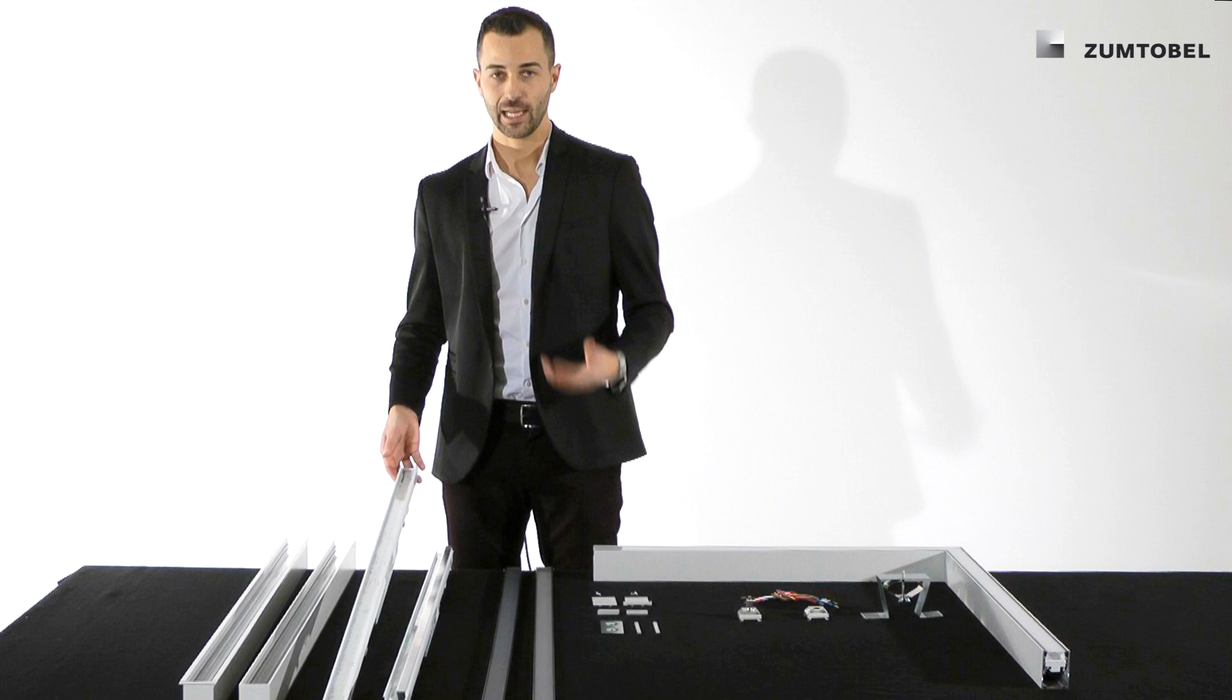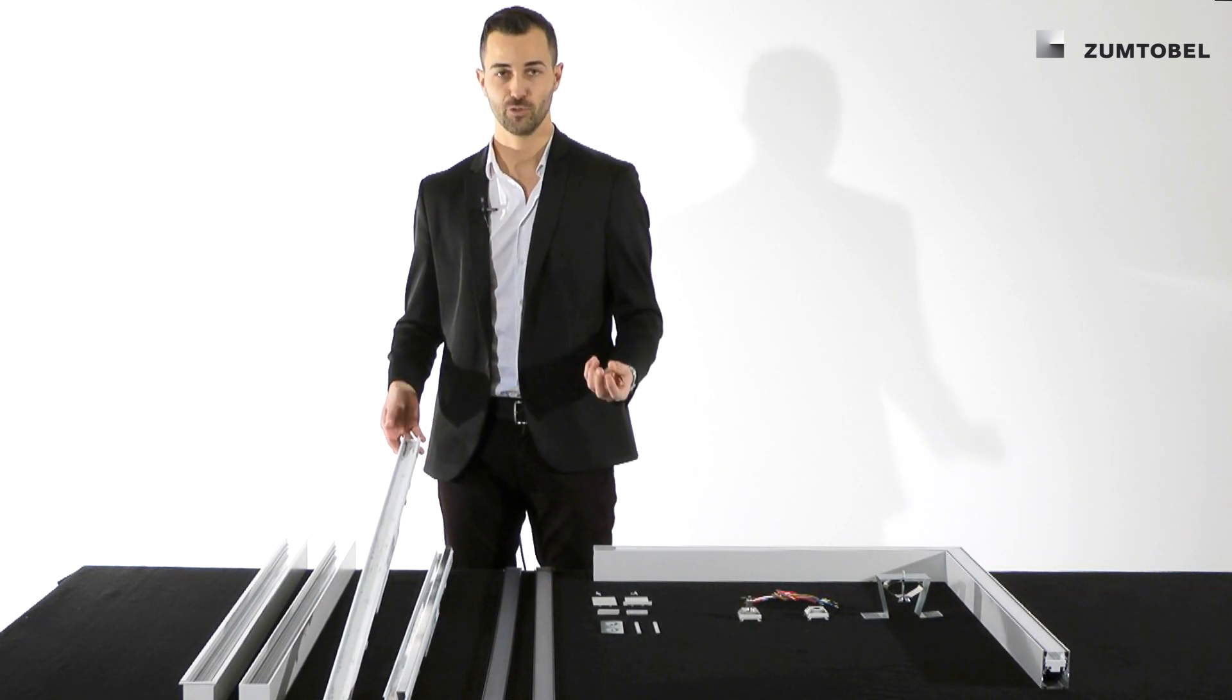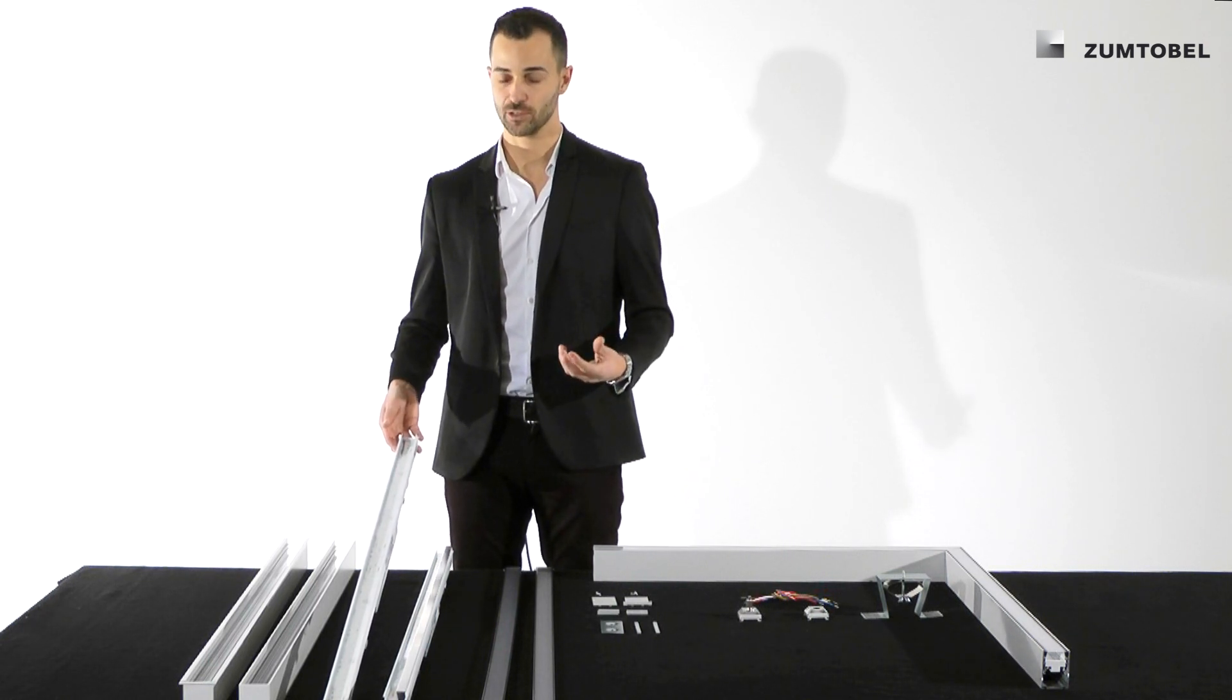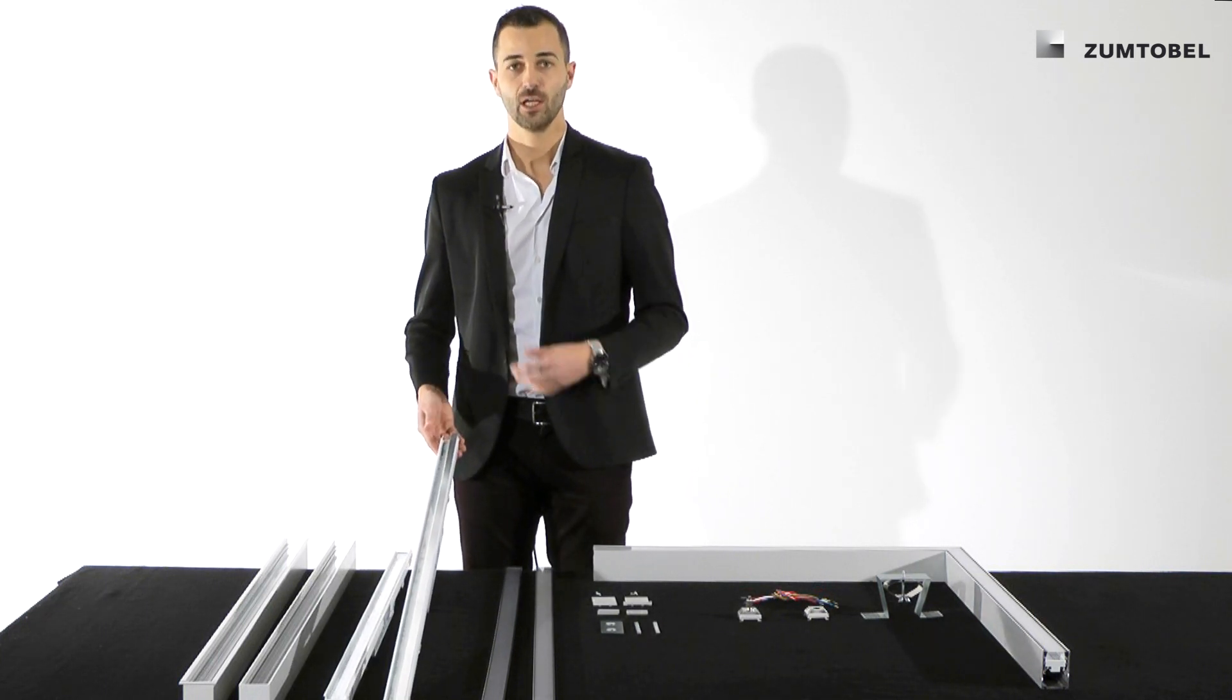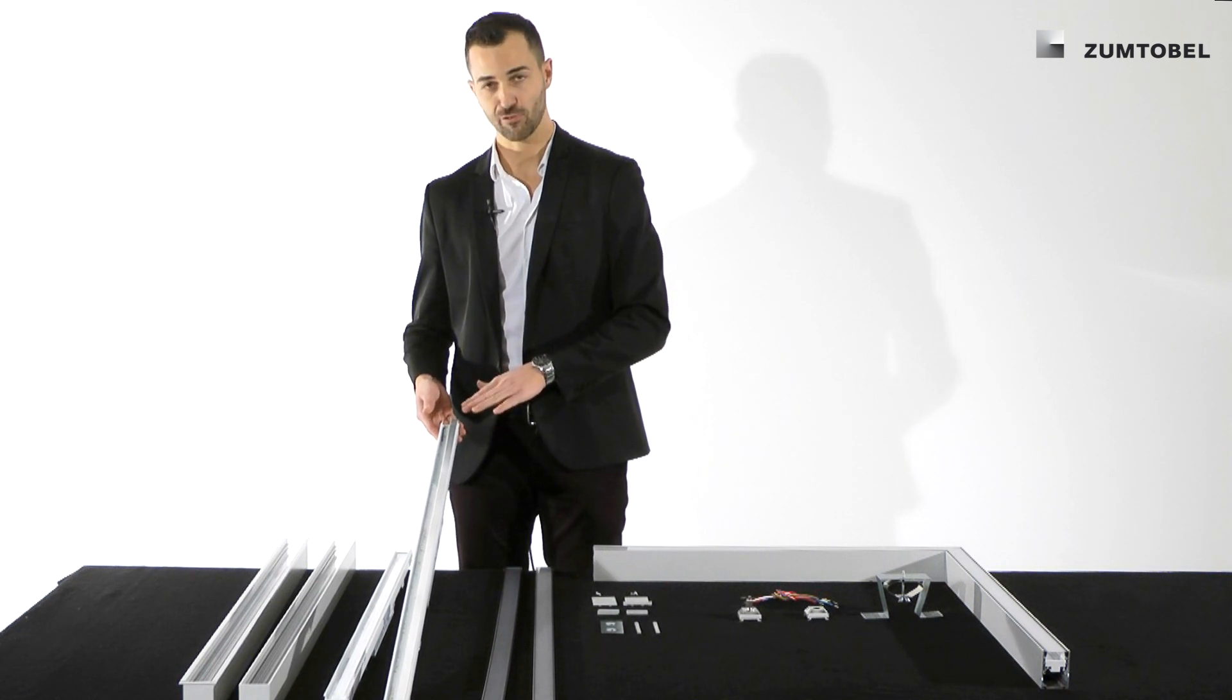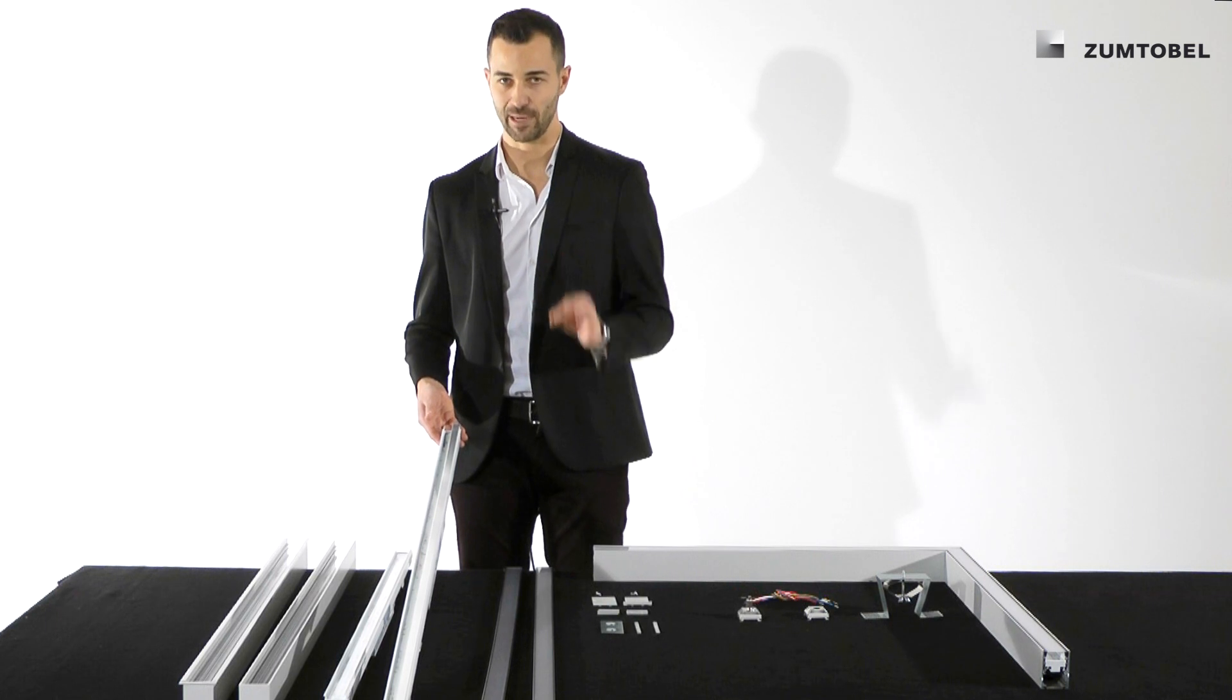We have two LED batons in the portfolio. One is for the standard PC, the diffuse optic, and also the PCO for the office optic for better glare values. There's a second one, the wall washer LED baton for asymmetric light distribution. Attention! There's one little difference. The reflector is already mounted on the LED baton.